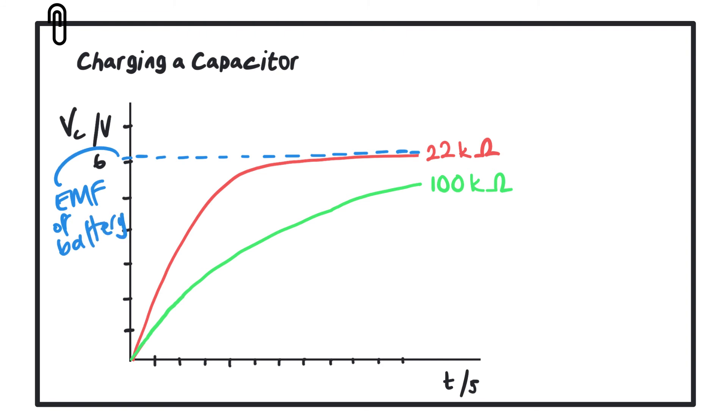When we're charging the capacitor, what we should find is that if we look at the circuit drawn in red here, the 22 kOhm resistor circuit, the charging happens very quickly at the beginning and then it starts to level off as it gets closer and closer to that 6 volts.